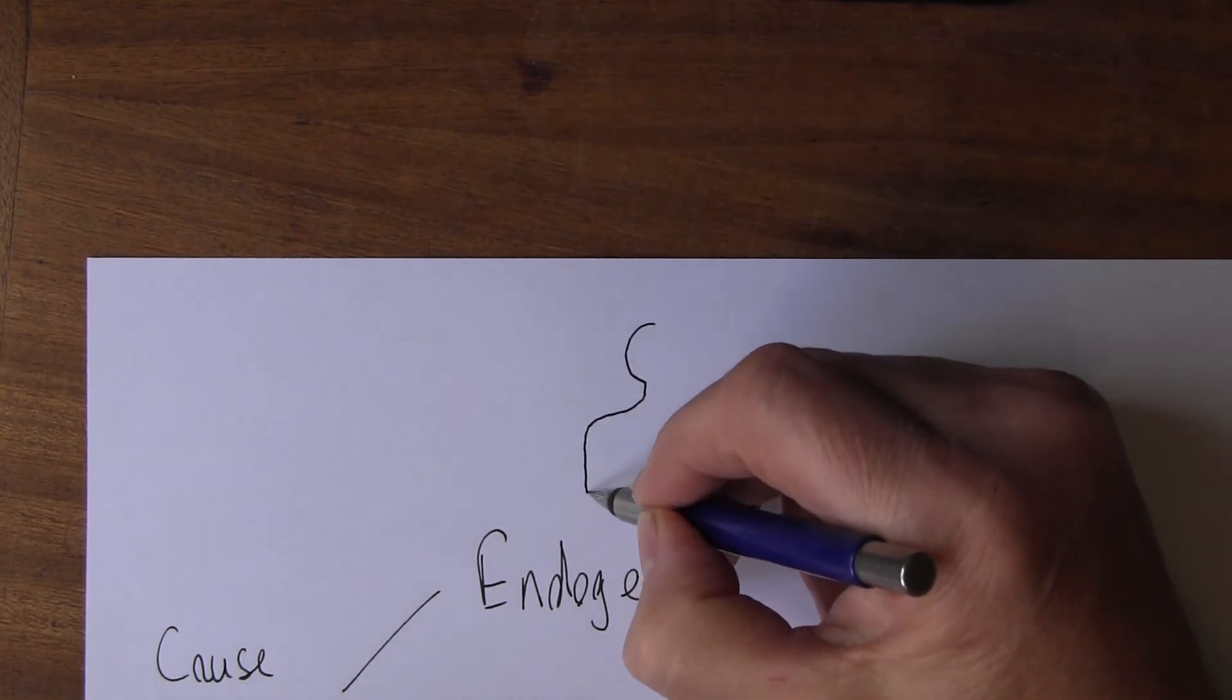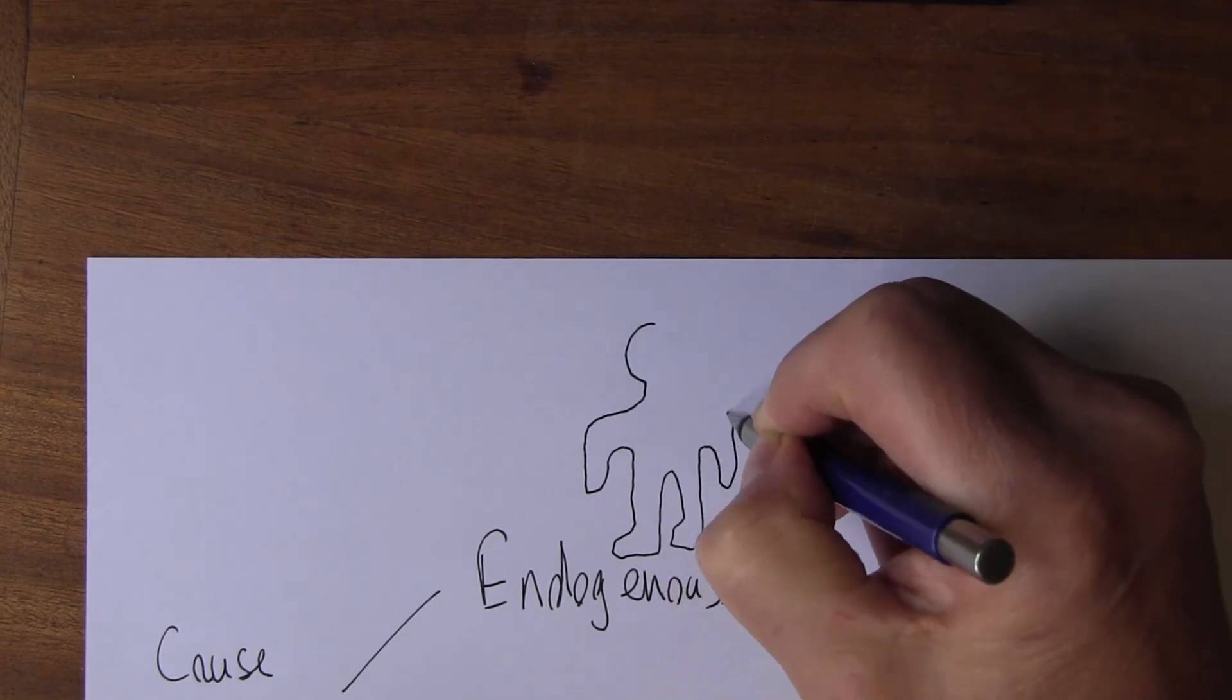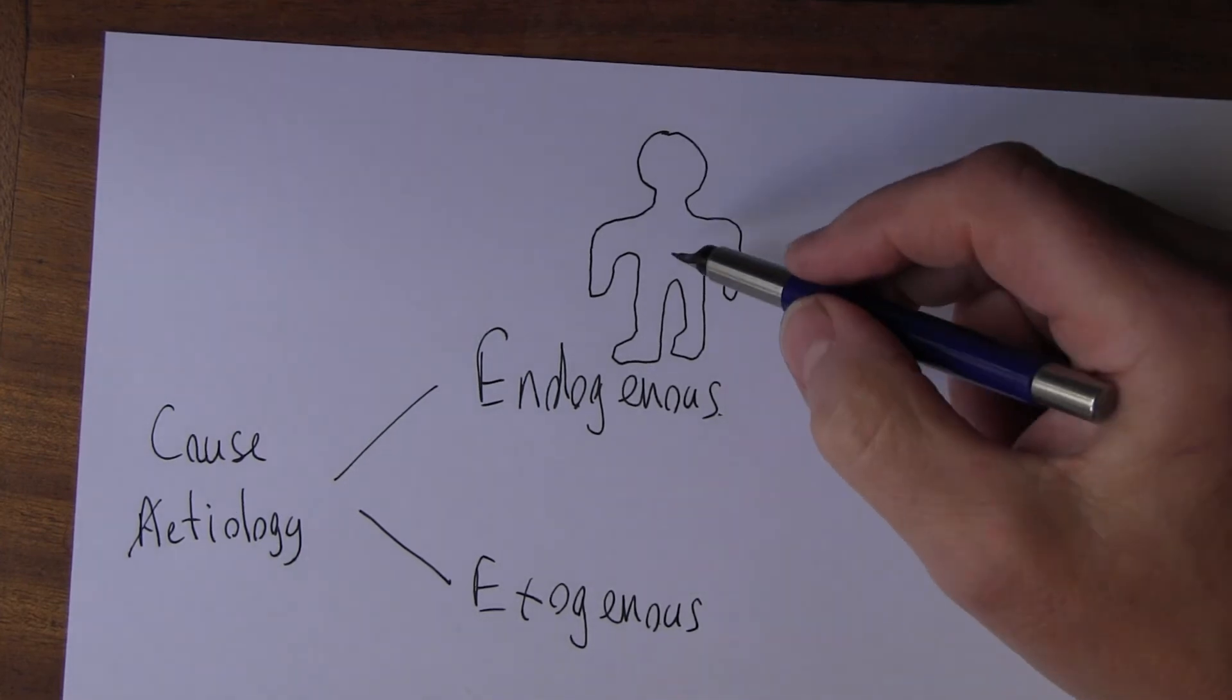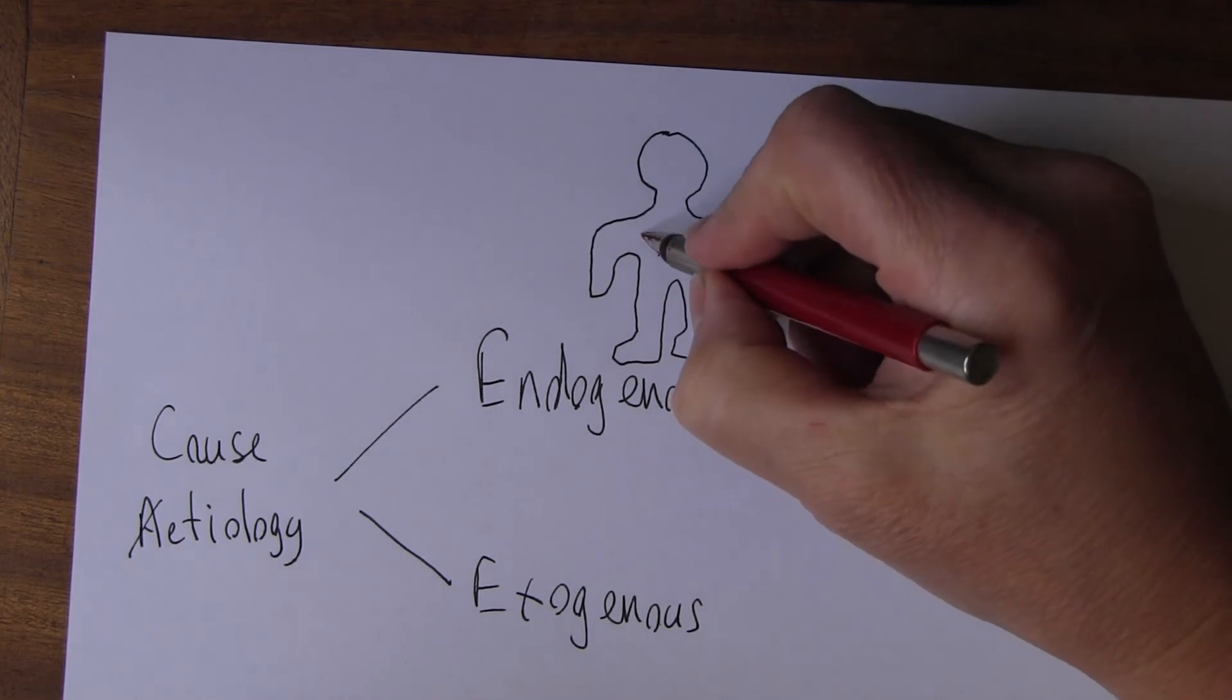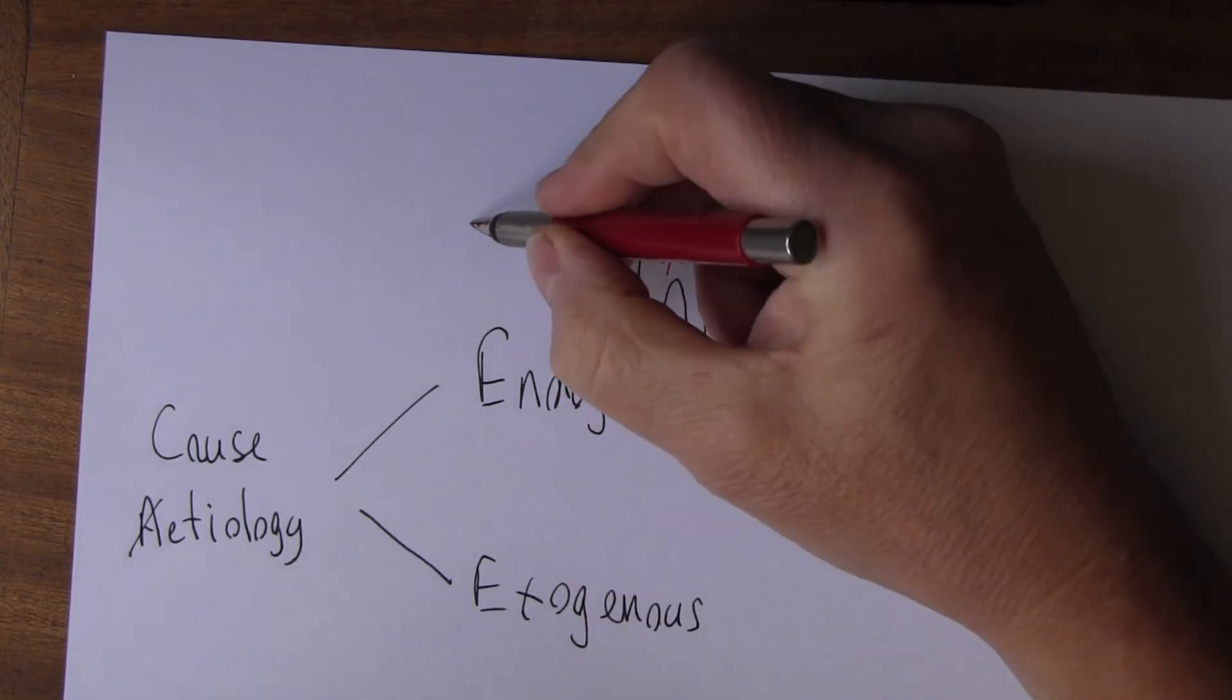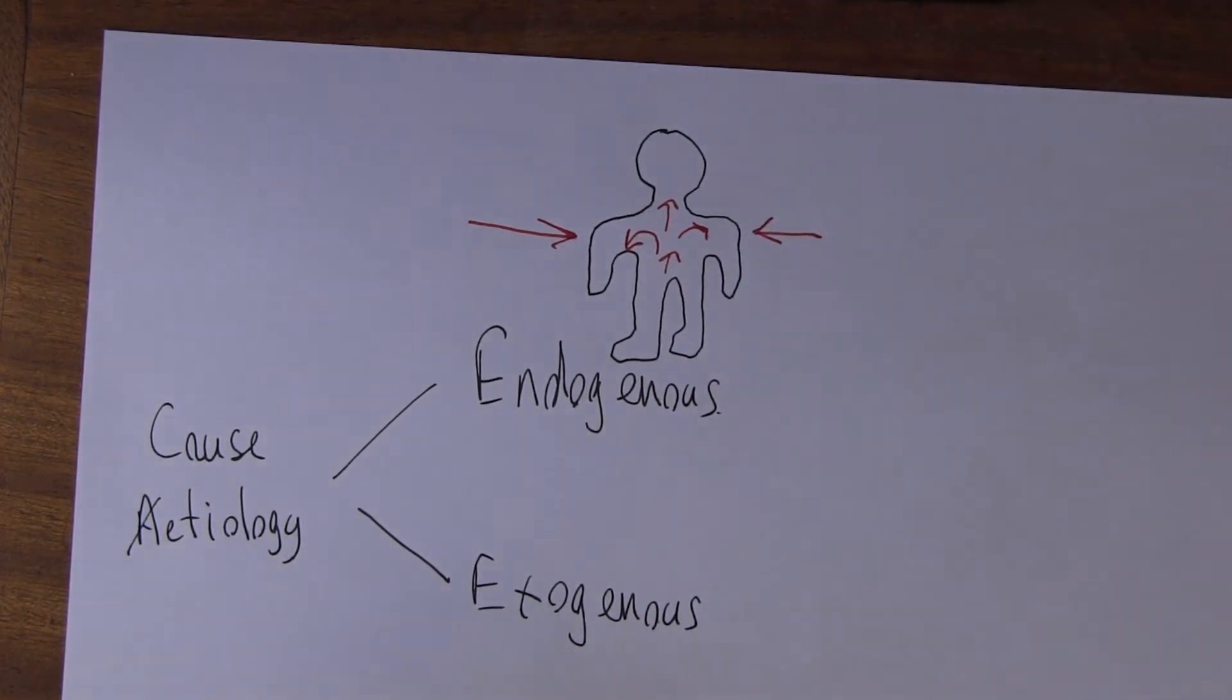Now endogenous comes from within the person. So here we have the person who's actually quite happy. Sure you can draw people much better than I can. So here's the person walking along. Endogenous disease will affect the person from within - these are factors within the person. Exogenous disease are things from outside that affect the well-being of the individual.